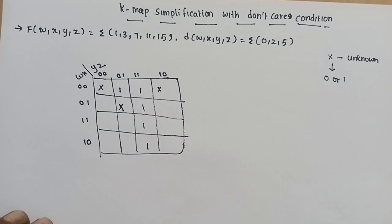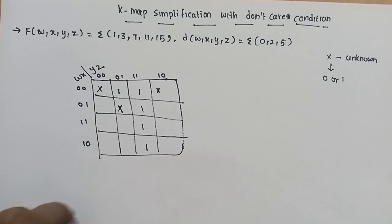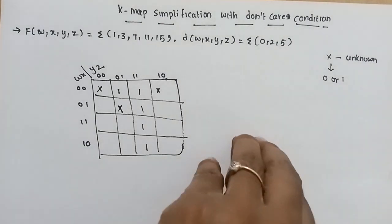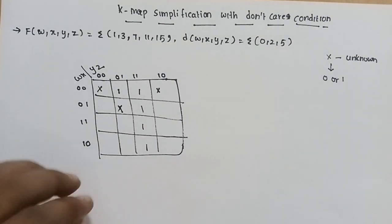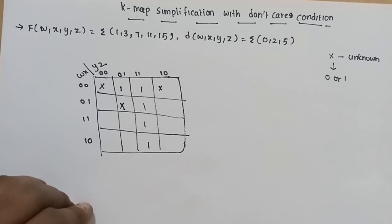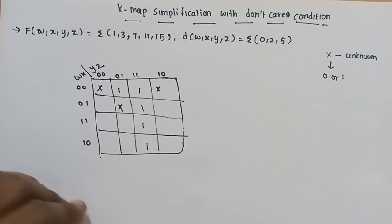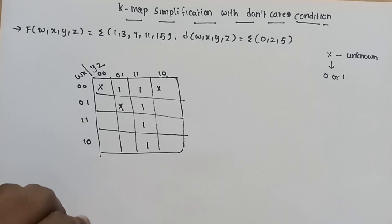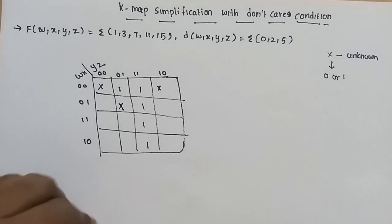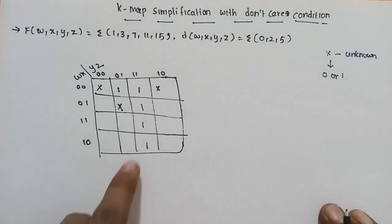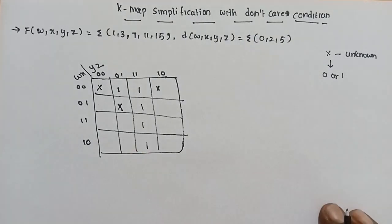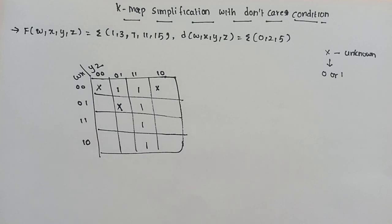Now we have the variable space, min term space, one space, don't care space. So now we have the minimization. We have to group the maximum number of squares. This is 16 squares.